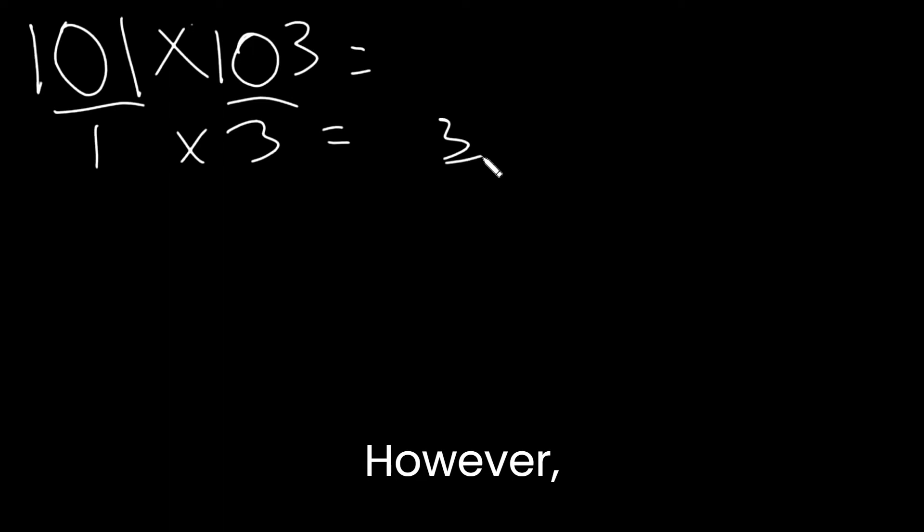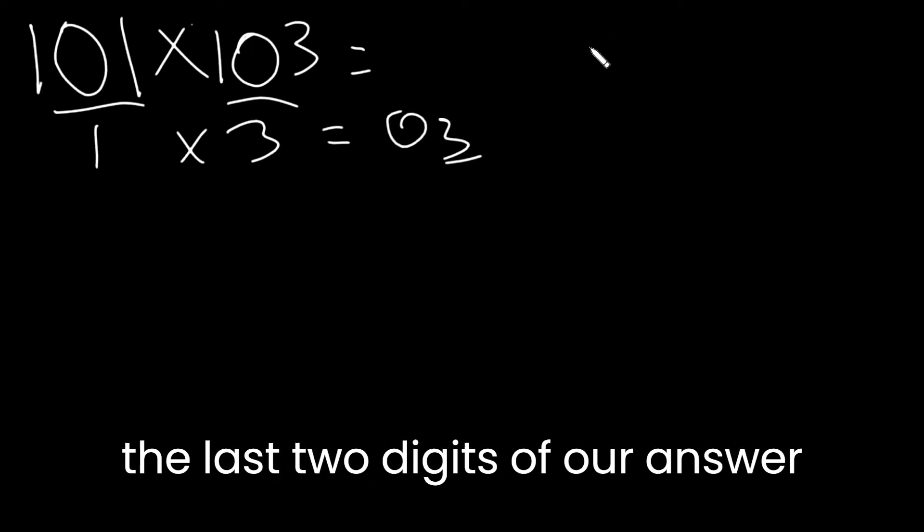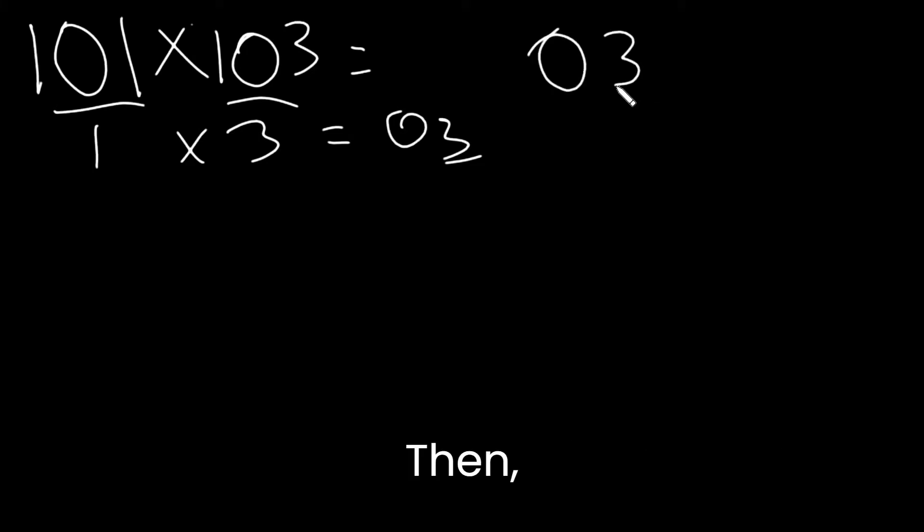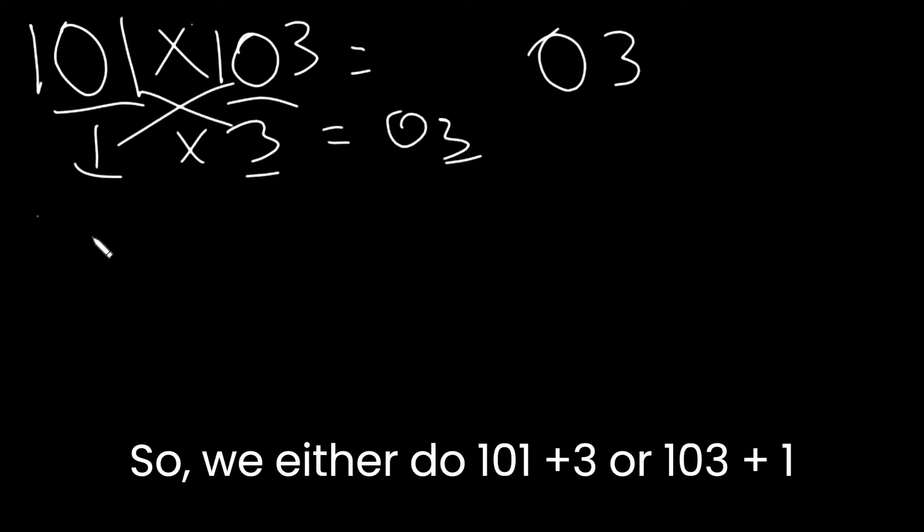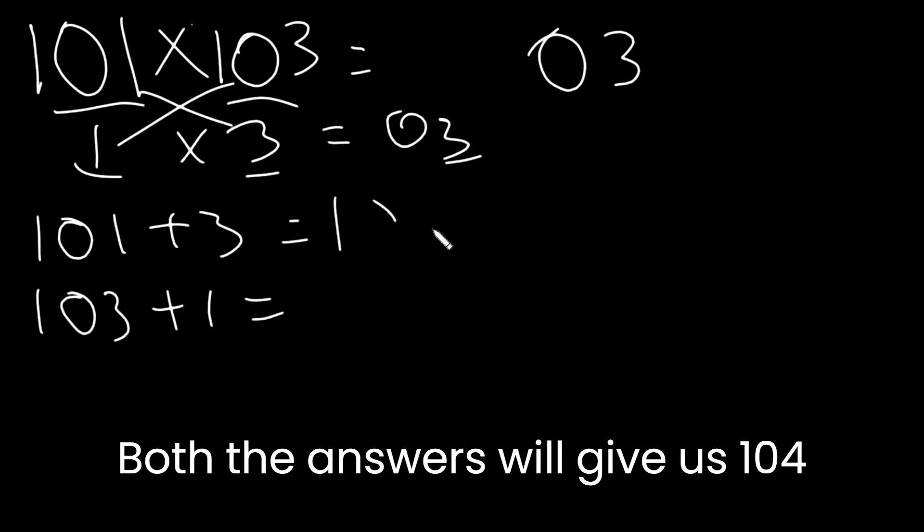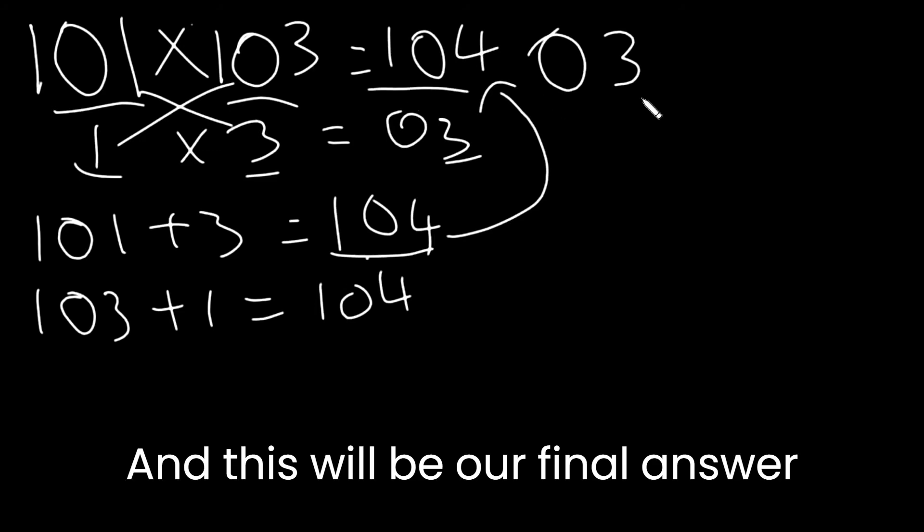However, 3 is will be one digit so we need to add a zero. So this will be the last two digits of our answer. Then we take either one of these and add it to the opposite one. So we either do 101 plus 3 or 103 plus 1. Both the answers will give us 104. This number will go over here. And this will be our final answer.